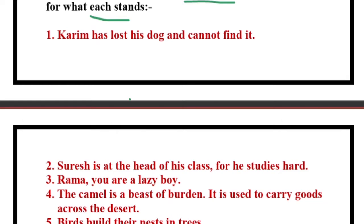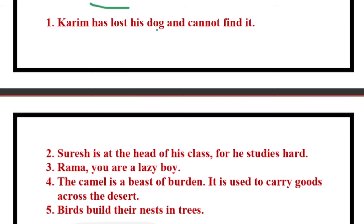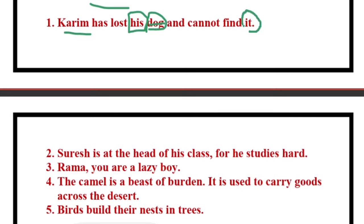Let us try: 'Karim has lost his dog and cannot find it.' Karim is the noun. Now what is the pronoun here — 'his dog'? No. 'His' is not the possessive pronoun because there is a noun beside it — noun and pronoun cannot sit side by side. So 'his' requires a noun — that means this is not a pronoun, this is a possessive adjective. The pronoun in the first sentence is 'it,' which is used in the place of 'dog.'